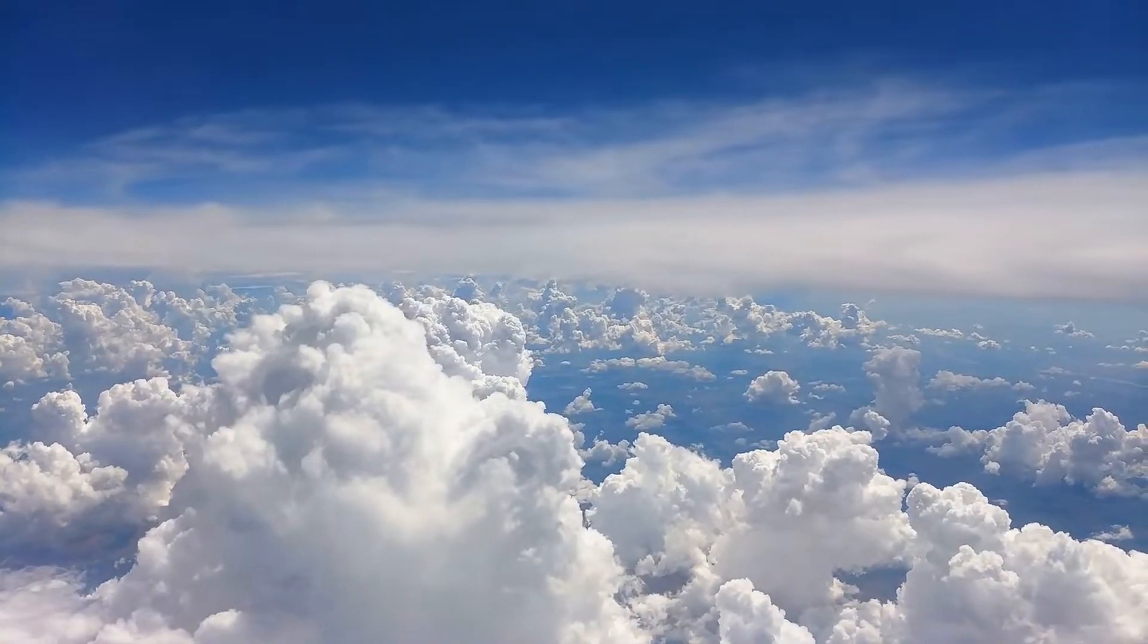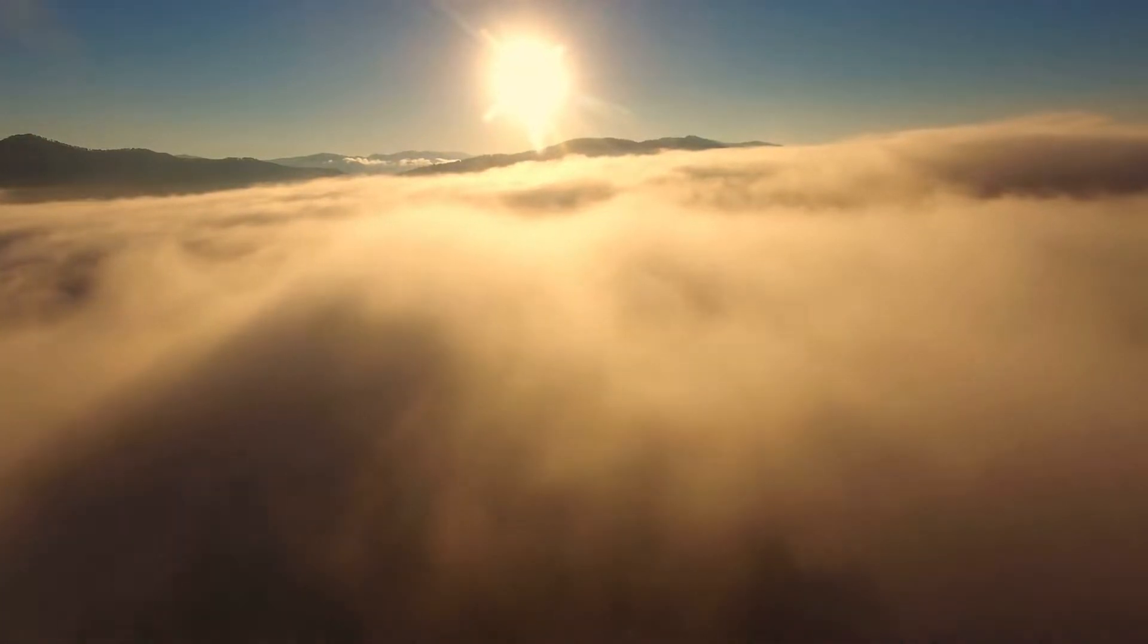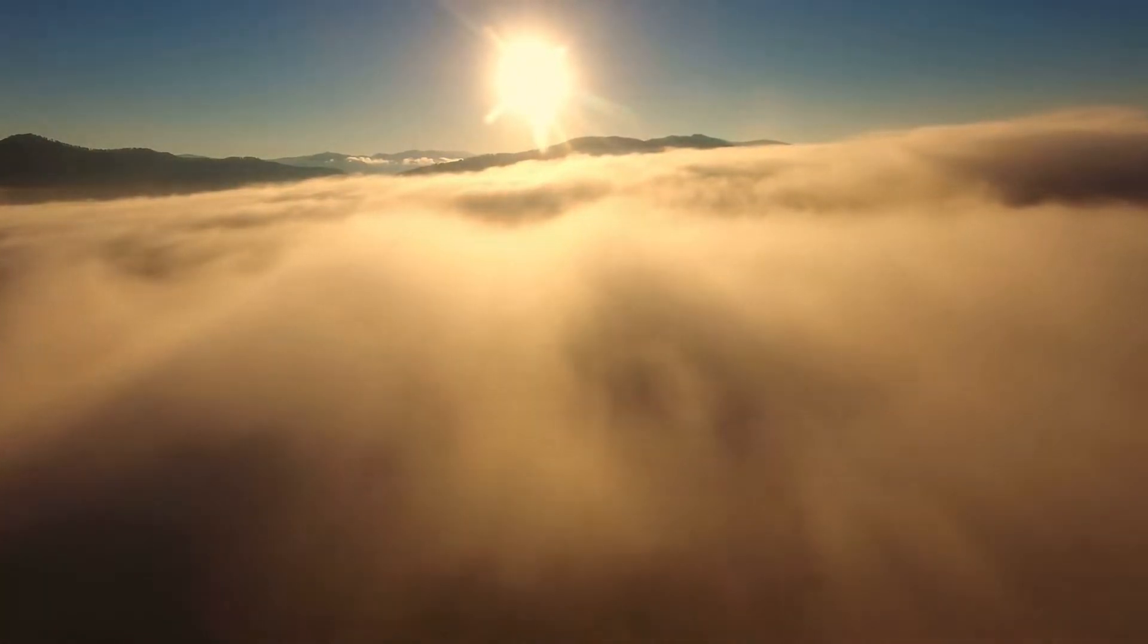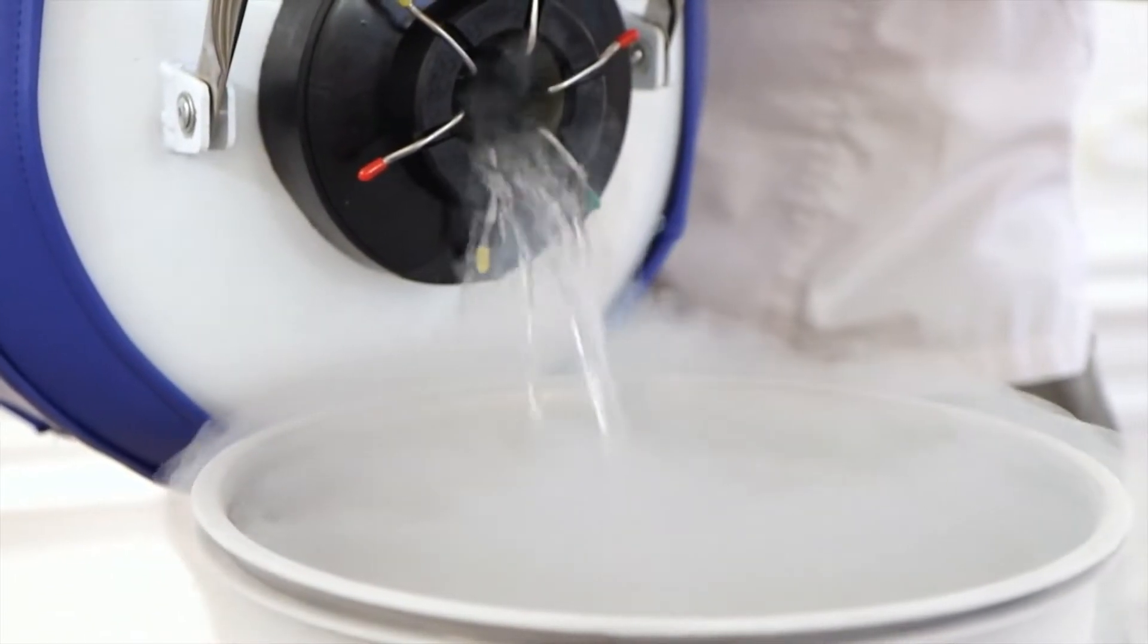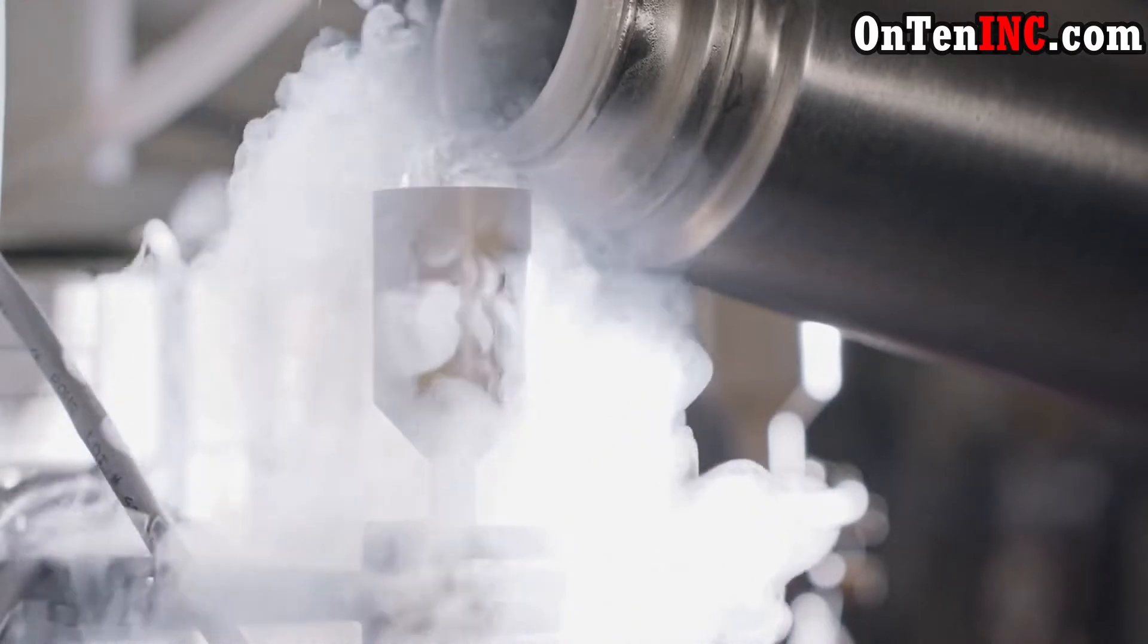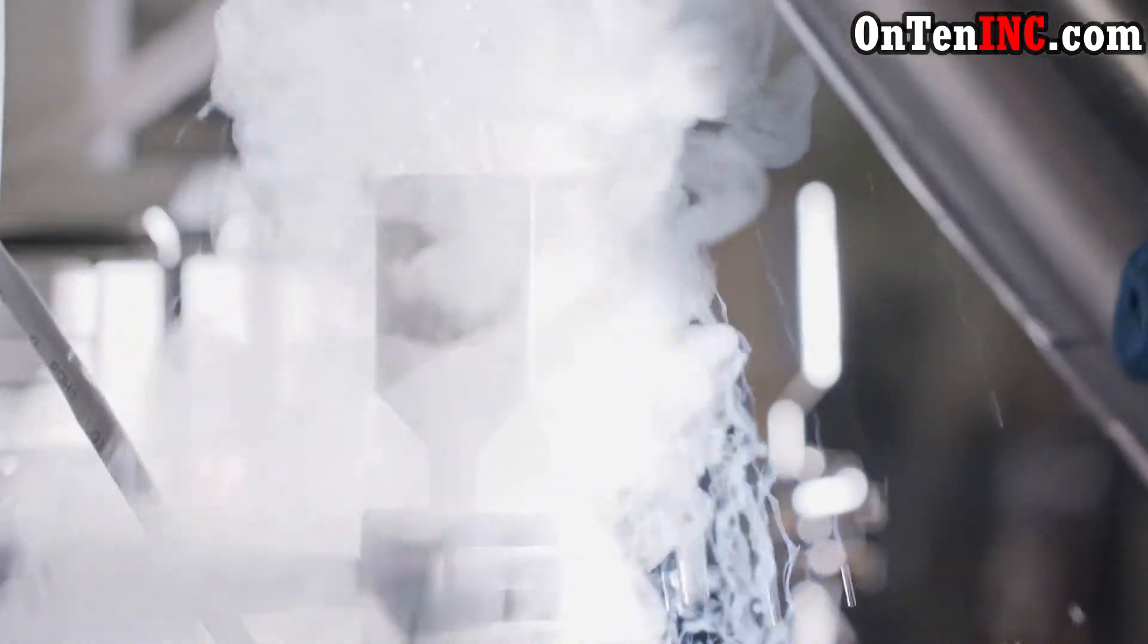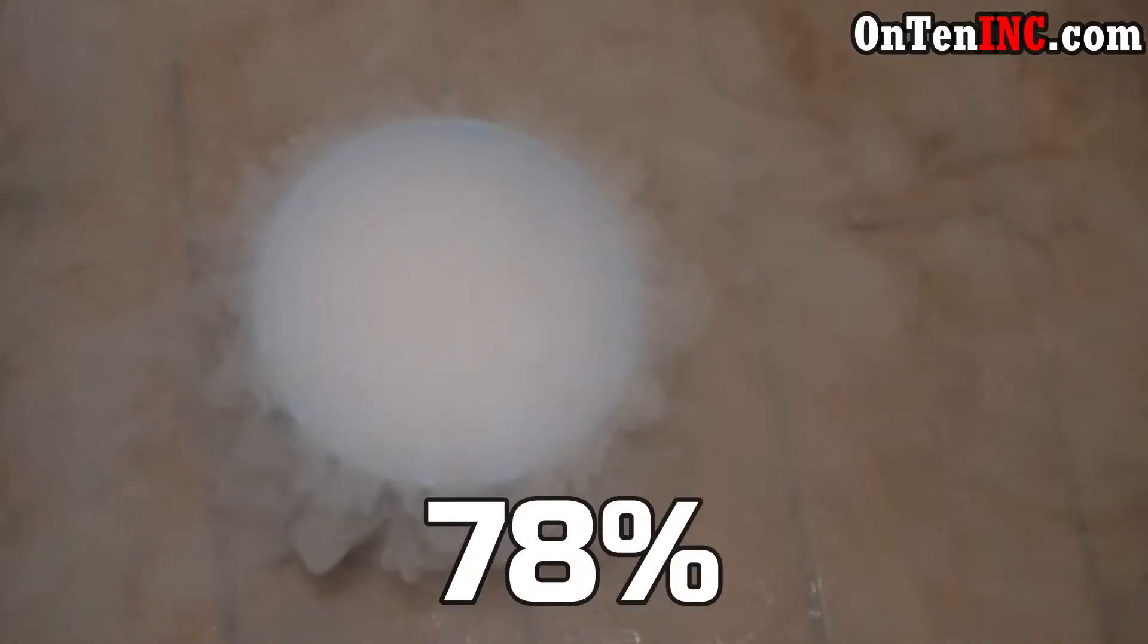Most of the nitrogen in our world is in a shape of gas and you can't see it, but you can turn this nitrogen into liquid. To turn nitrogen gas into liquid you have to make it very cold because when we turn air into liquid, 78% of it is nitrogen.